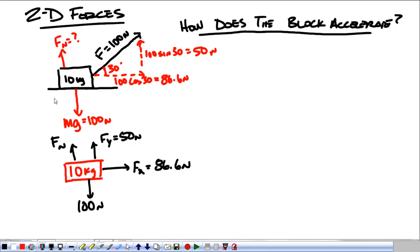Now, we know that this block does not slide into the ground or pop up off of it. So I know that the up forces and the down forces have to equal each other. What that tells me is that the normal force and the force in the y have to both add up to 100. In order for that to happen, the normal force is going to be 50 newtons.